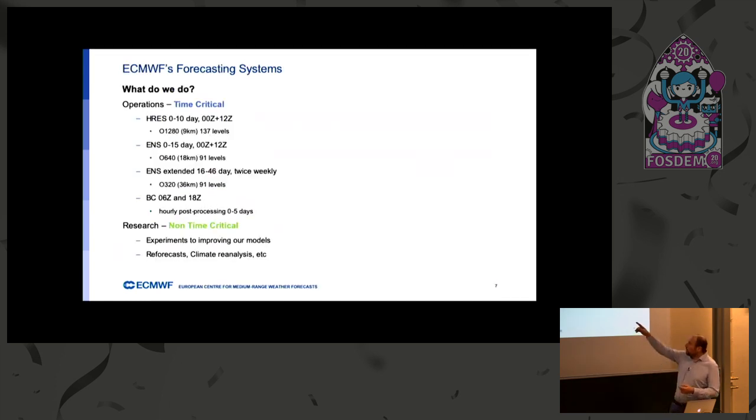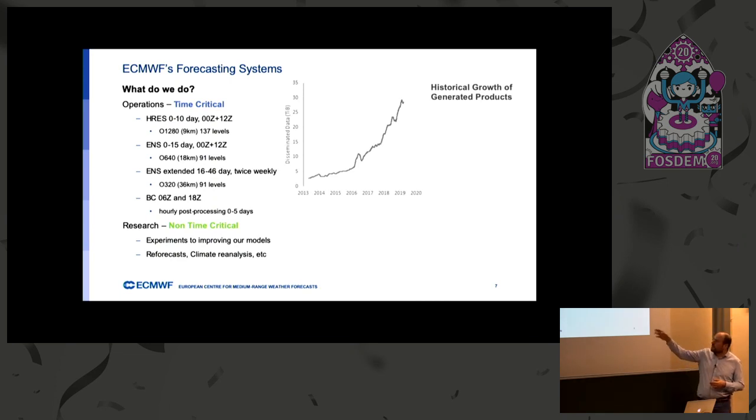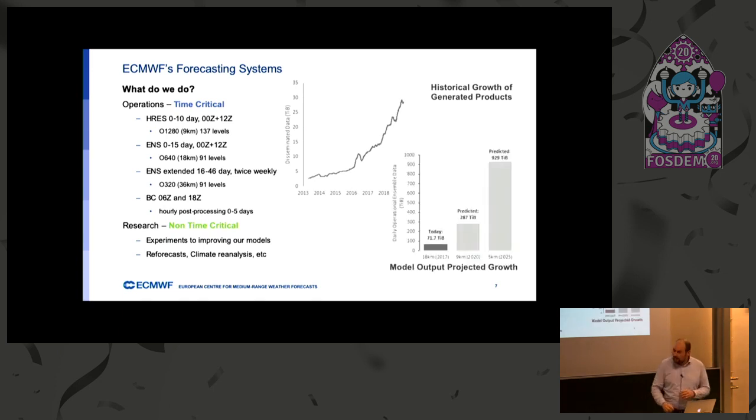So a little bit more in detail. We perform every day, twice a day. So with two different timing at midnight and at noon, we perform a simulation at nine kilometers. Then we perform 50 simulation with an ensemble of 50 simulation at 18 kilometers of the resolution. Again, twice a day. Then we have a lower resolution, but extended in time simulation. And then we have also quite a lot of research activity that is also generating new data set. This is the amount of data that we distribute. And in the last few years, the amount of data has been increasing almost exponentially. And this is our forecast.